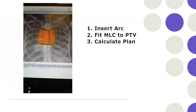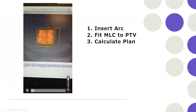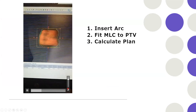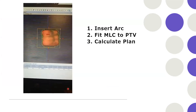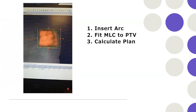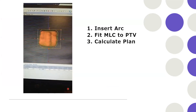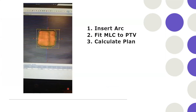Here is a video showing how DCAD works. You can see the volume encompassed and the arc going around — it's quite simple to create the plan. You insert the arc the same way you would for VMAT. Then, without going into optimization, fit the MLC to the PTV and calculate the plan. These are the three simple steps and the plan is ready.